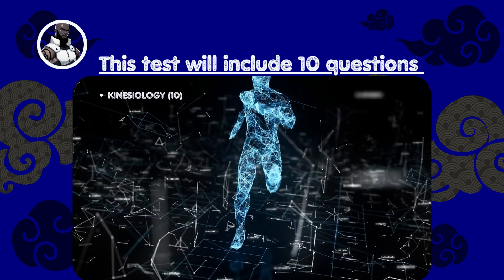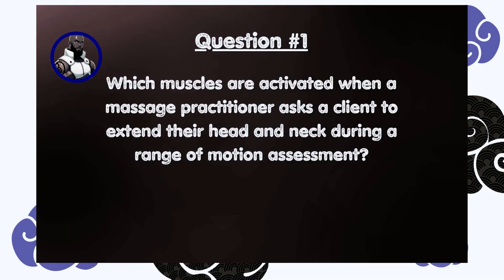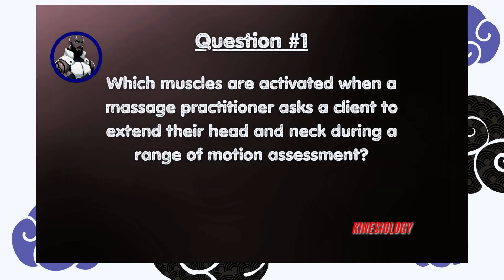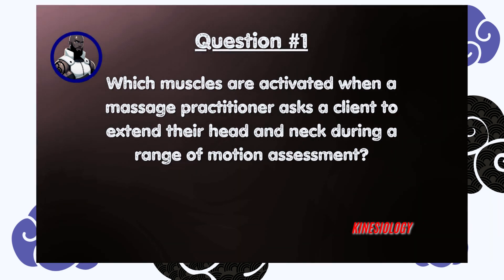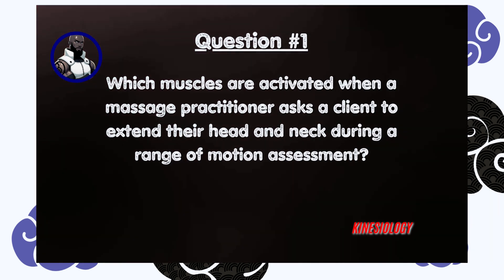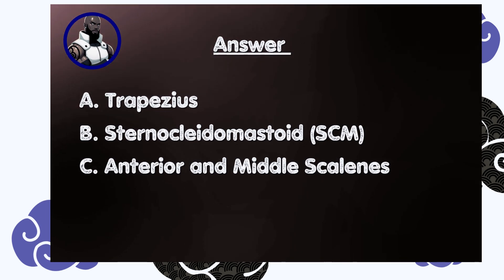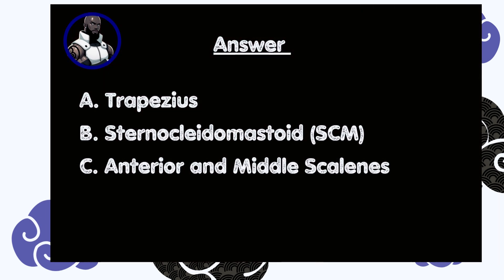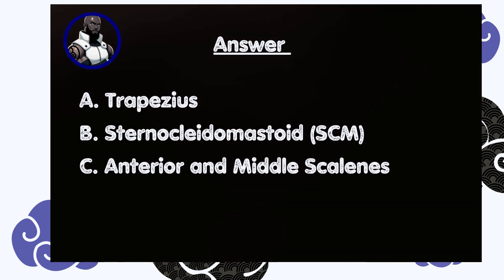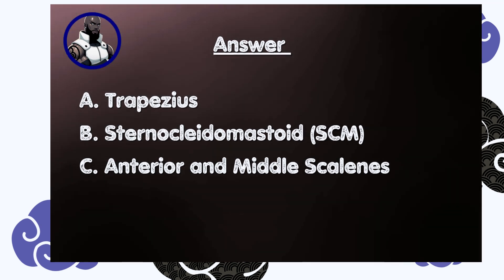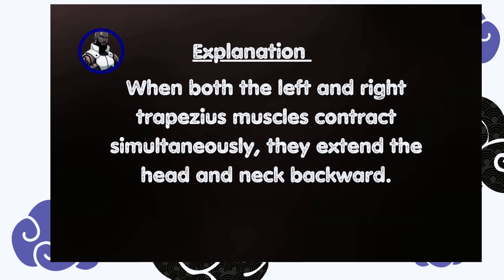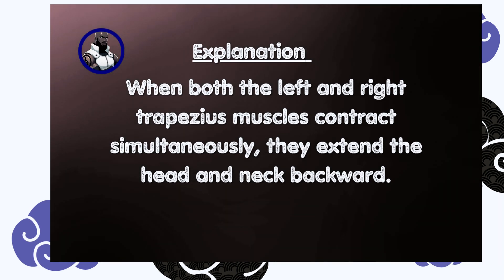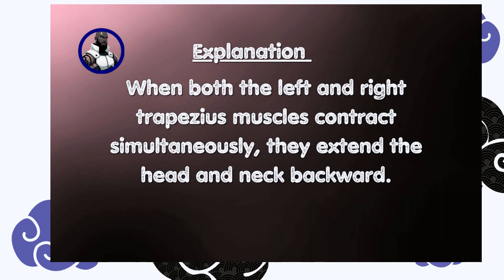This test will include 10 kinesiology questions. Question number one: which muscles are activated when a massage practitioner asks a client to extend their head and neck during a range of motion assessment? A) Trapezius, B) Sternocleidomastoid (SCM), C) Anterior and middle scalenes. Answer is A, trapezius. When both the left and right trapezius muscles contract simultaneously, they extend the head and neck backward.